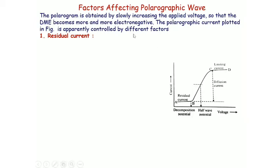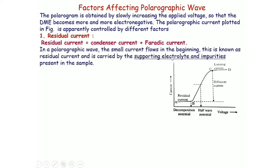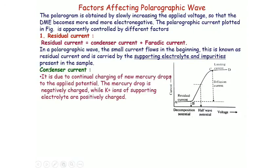Residual current is due to impurities and the supporting electrolyte present in the solution. Residual current equals condenser current plus Faradic current. In the polarographic wave, a small current flows in the beginning — this is the residual current, carried by the supporting electrolyte and the impurities present in the solution.